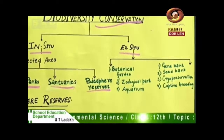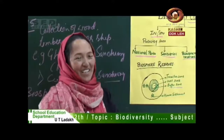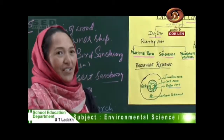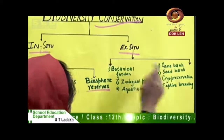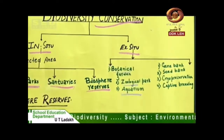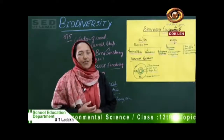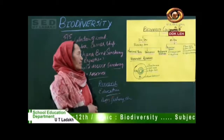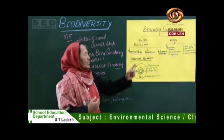Ex-situ conservation is the conservation of organisms — plants or animals — outside their natural habitat. Under ex-situ conservation, we have botanical gardens, zoological parks, and aquariums. In a botanical garden, there are many plant species including flowers, horticulture plants, and decorative plants. Exotic species are also kept for research work in botanical gardens.